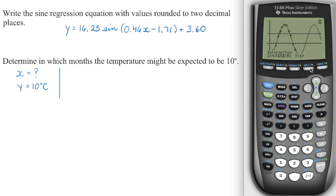And then I'm going to go second function trace, number five again. And we're going to scoot our little cursor over here to where those intersect. So we're going to go enter, enter, enter. And in the ninth month, so in September, it's also going to be expected to hit 10 degrees. And then you can see this is just going to be year two. So I don't need to worry about those values.